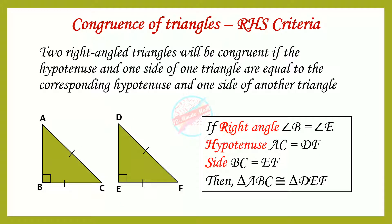RHS criteria: Two right-angle triangles would be congruent if the hypotenuse and one side of one triangle are equal to the corresponding hypotenuse and one side of another triangle. Here we can see that right angle B is equal to right angle E, hypotenuse AC is equal to DF, and side BC is equal to EF. Therefore, the two triangles are congruent according to the RHS criteria.